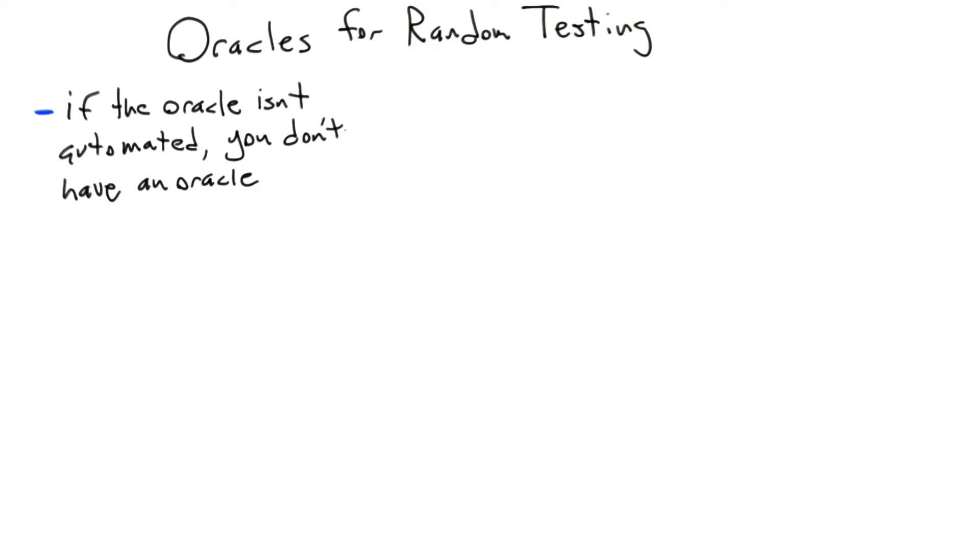So now we're going to talk about oracles, and we've probably deferred this topic for too long. Oracles are extremely important for random testing because if you don't have an automated oracle—that is to say, if you don't have an automated way to tell if a test case did something interesting—then you've got nothing.